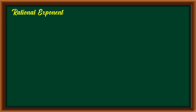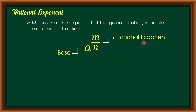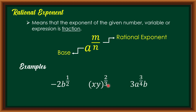But before that, let us recall what a Rational Exponent is. In my last video, I discussed how to simplify Rational Exponents. If an exponent is written in rational form, the exponent of the given number, variable, or expression is a fraction. For example, we have a raised to m over n, in which a is our base and m over n is the rational exponent. Examples include: negative 2b raised to one-half, quantity xy raised to two-thirds, and 3a raised to three-fourths b. These expressions contain a fraction as exponent — this is an expression written in exponential form.